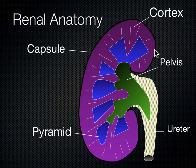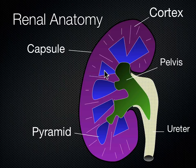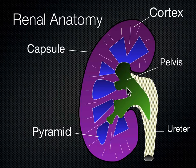This schematic diagram of the kidney shows the capsule structure on the outside, the cortex where all the nephrons are, the pyramid structures full of urine that coalesce into the renal pelvis — sometimes called the renal sinus — and then that drains down the ureter into the bladder.